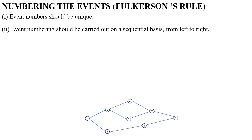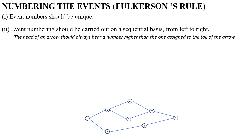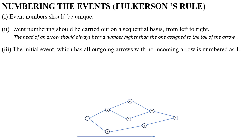Second rule is, event numbering should be carried out on a sequential basis from left to right. The head of an arrow should always bear a number higher than the one assigned to the tail of the arrow, which means the head event should always have a higher number than the tail event in the respective activity.